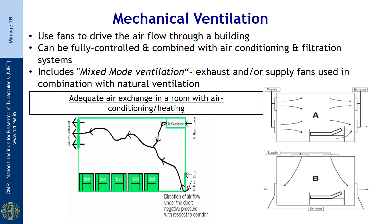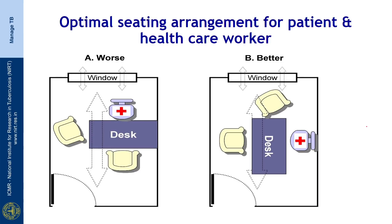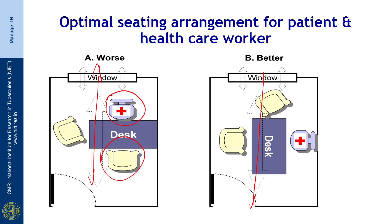This figure shows the optimal seating arrangement for patients and healthcare workers. In Figure A, the doctor is sitting just in front of the window and the patient is also sitting in front of the window, but the air flow moves in a direction where there is a possibility that the healthcare worker may get infected with the patient's infectious materials. The better arrangement, shown in Figure B, is to place the doctor and patient such that a stream of air separates them — the window and the stream of air act as a separator between the healthcare worker and the patient.